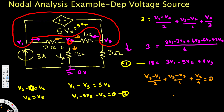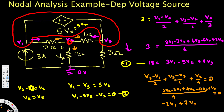Taking 4 as the common denominator: 2(V2 − V1) + 4(V2 − V3) + V2 = 0. Expanding and combining: −2V1 + 7V2 − 4V3 = 0. This is Equation 3.